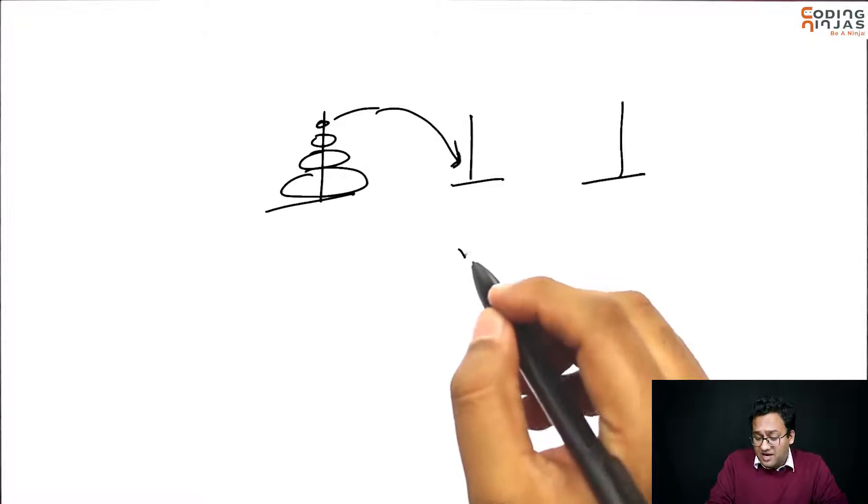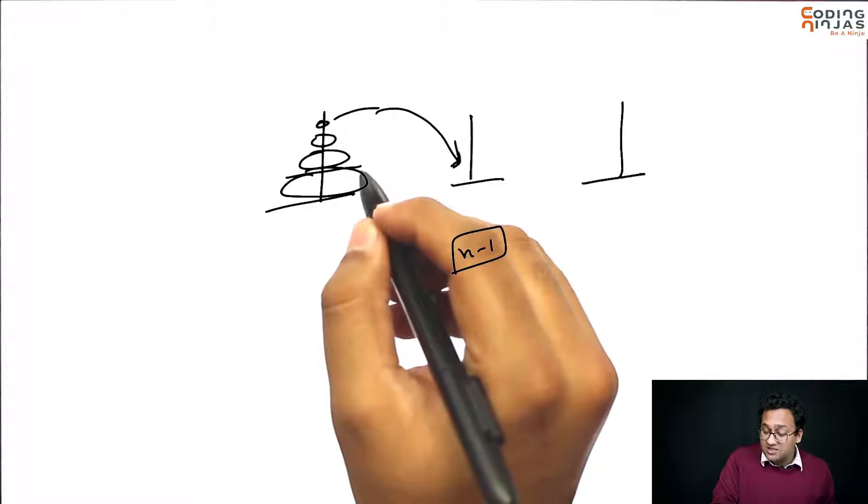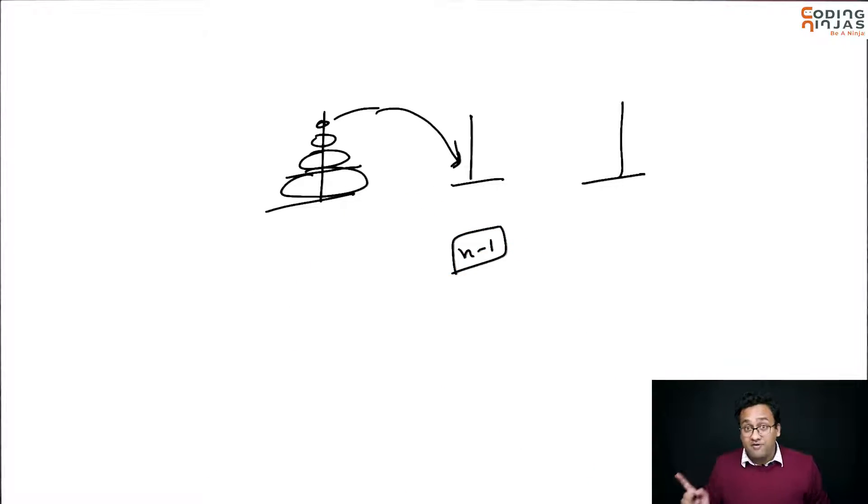If I have n minus 1 disks, I can assume that I can move them from one pole to another using a helper. So, the situation has to be exactly the same in the sense that I can move n minus 1, but I need to have a helper as well and I need to make sure that the destination is also there. Right?